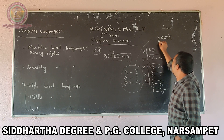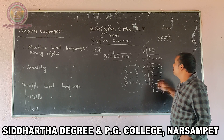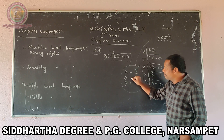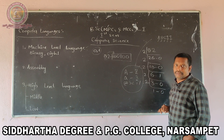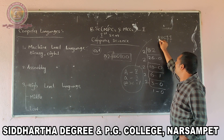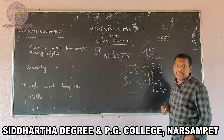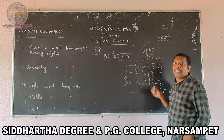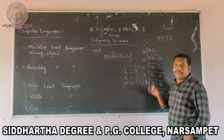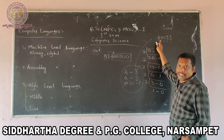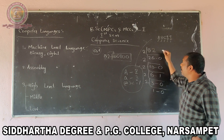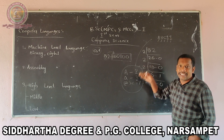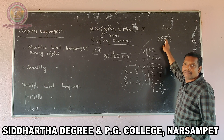ASCII coding means American Standard Code Information Interchange. The purpose of ASCII coding is to assign every character — small letters, capital letters, or special symbols — a unique number. Every character is given one of the numbers, and that number is the ASCII code. This way, every character is assigned a value.